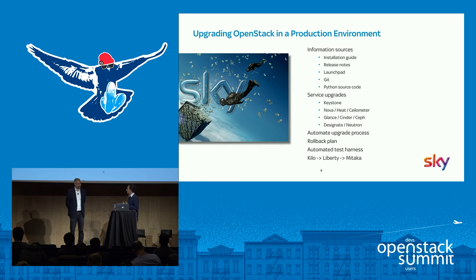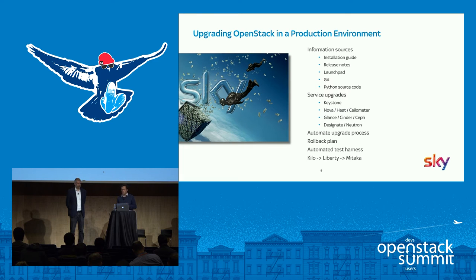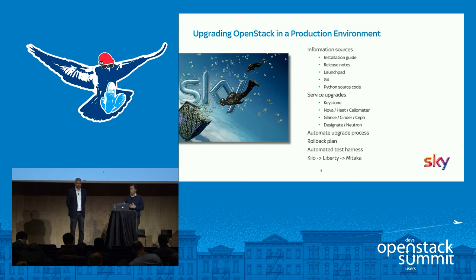Regarding service upgrade order: it's widely agreed you should start with Keystone and do some tests before moving on. If all is okay, move to Glance, Cinder, and other satellite products like Heat and Ceilometer, and leave Nova and Neutron as the last services. This is especially important when moving from Liberty to Mitaka, because there's a bug where the Nova Compute Node must be upgraded before the Neutron node — to prevent logs being filled with warnings about missing VIF interfaces. Try to automate as much as possible to minimize downtime, and if you have a huge number of compute nodes, try to parallelize, especially if running overlay GRE networks.